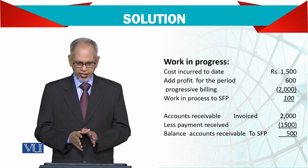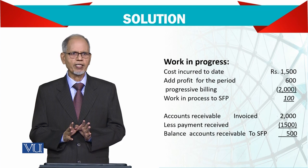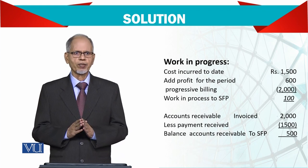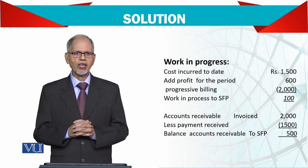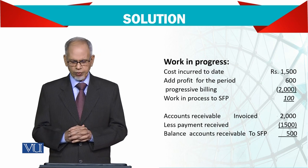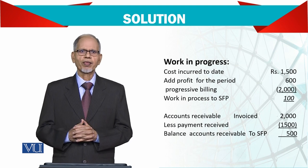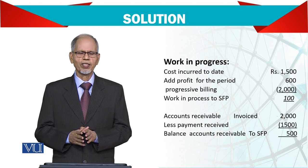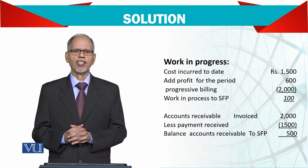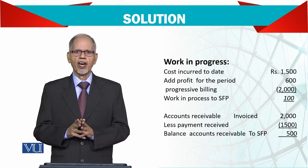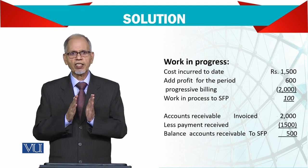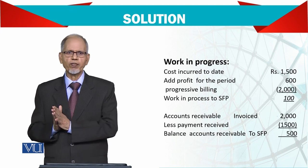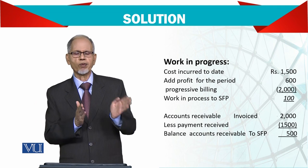For work in progress: take cost incurred to date, add profit for the period, and deduct progressive billing. Normally billing is not done purely at cost — you add your profit and then bill. The work in progress figure going to the balance sheet is 100,000. For account receivable: invoices raised were 2 million, but if payments received exceed that, it becomes a liability shown in the balance sheet, not as an asset.